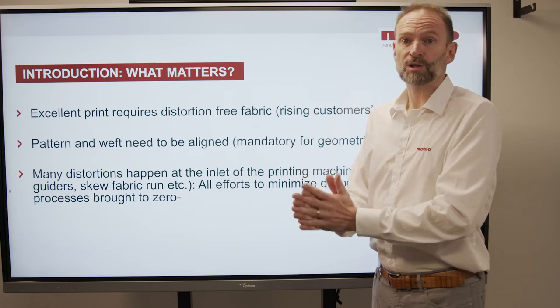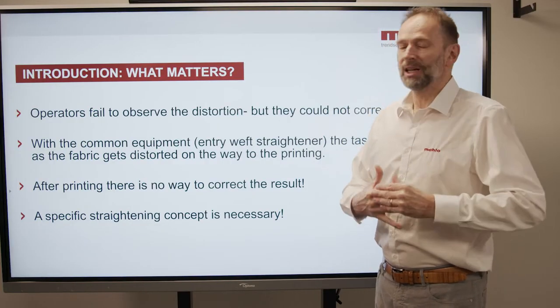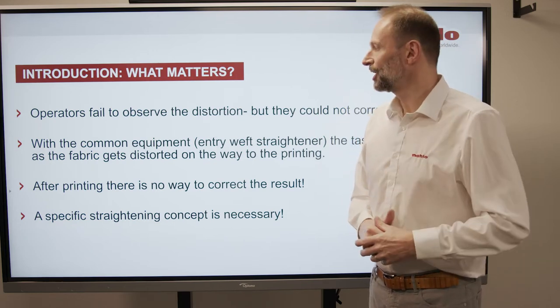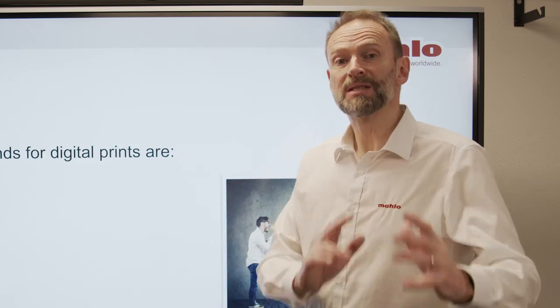Many distortions also happen at the inlet of the printing, and this is something you can avoid if you use a very good straightener for digital printing in the application of your digital printing line. Very often — I've been a production manager myself for a long time — operators fail to look for straight fabric or for quality issues in general. Therefore it is always good to have it in an automated process. With common equipment this task is not available, so you have to make sure that the fabric is really straight when it comes to the printing machine. Because after the printing there is no way that you can correct it at all, which means you need a specific straightening concept.